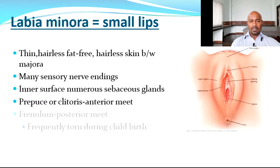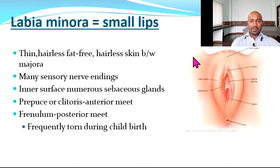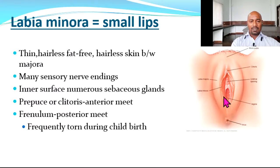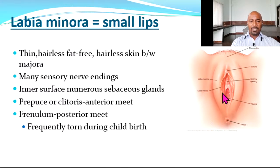Labia minora refer to the inner smaller lips — thin, hairless, fat-free skin between the labia majora. They are very rich in nerve endings and the inner surface contains numerous sebaceous glands. The two labia minora meet to fold over an erectile tissue called the clitoris, forming the prepuce of the clitoris. Where they meet at the posterior end they form a frenulum, which is usually torn during childbirth.